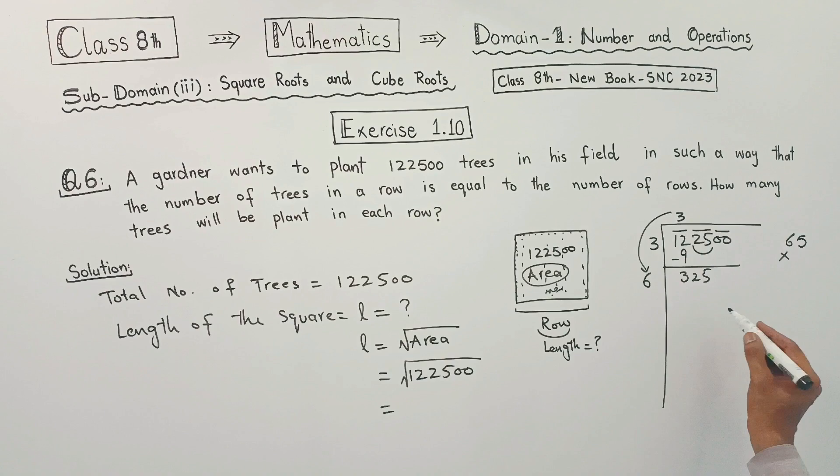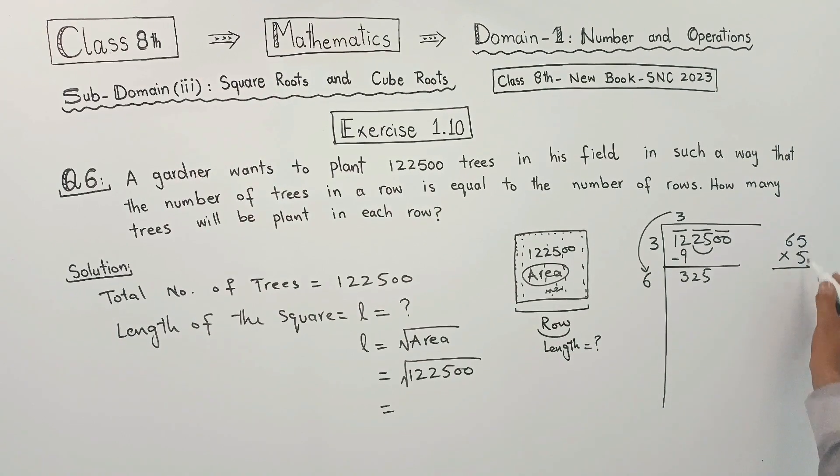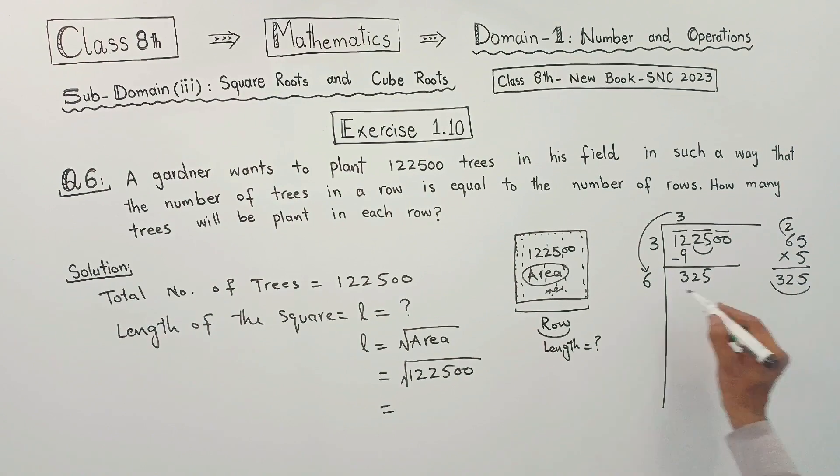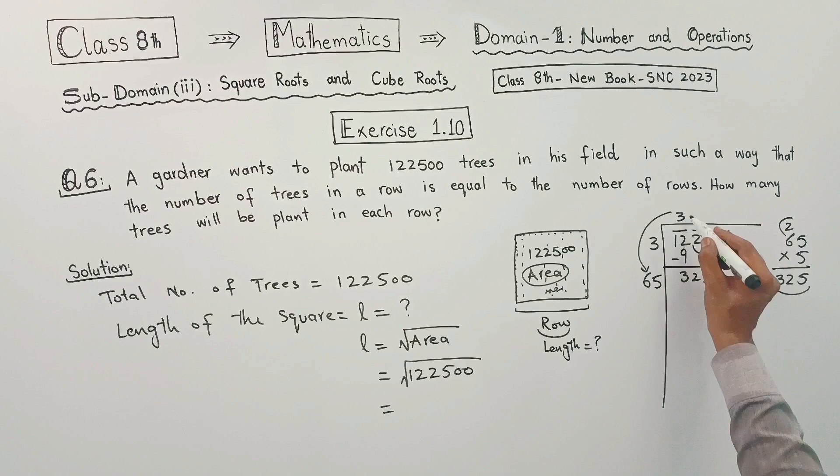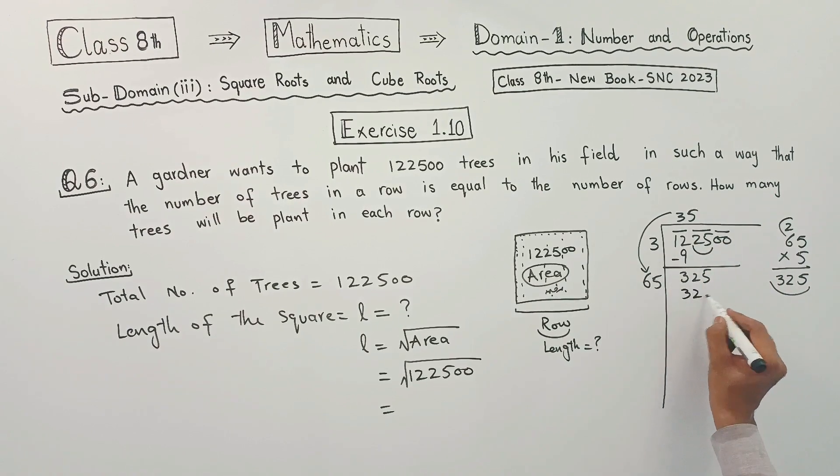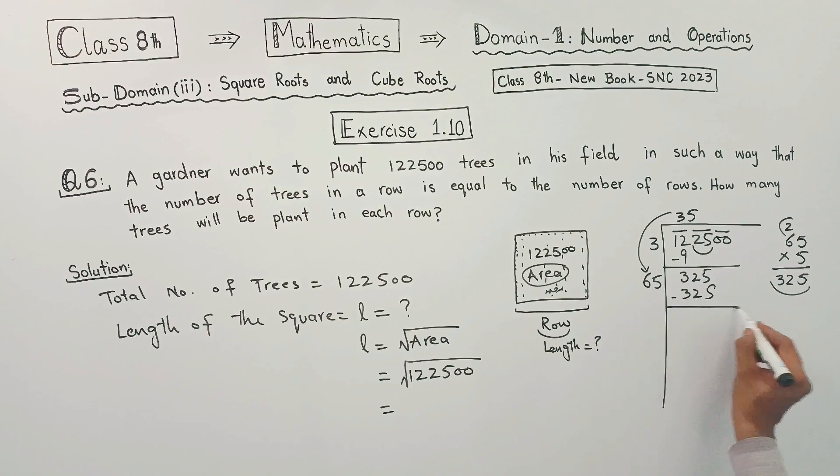At both places, put five. Five times five is 25. Five five makes 25. To the remainder, five six is thirty. Add thirty two, which gives three twenty-five. That means at both places we can use five. Sixty-five multiplied by five gives three twenty-five. Subtract this, no remainder, zero remainder.